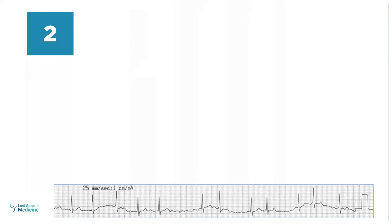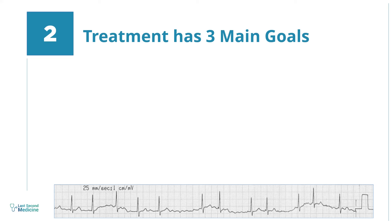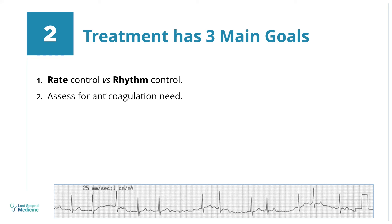Number 2. The treatment of AF has mainly three main goals. First, you have to decide about whether to do rate control or rhythm control. Second, is to assess the need for anticoagulation. Third, is to look for the underlying cause and treat it.